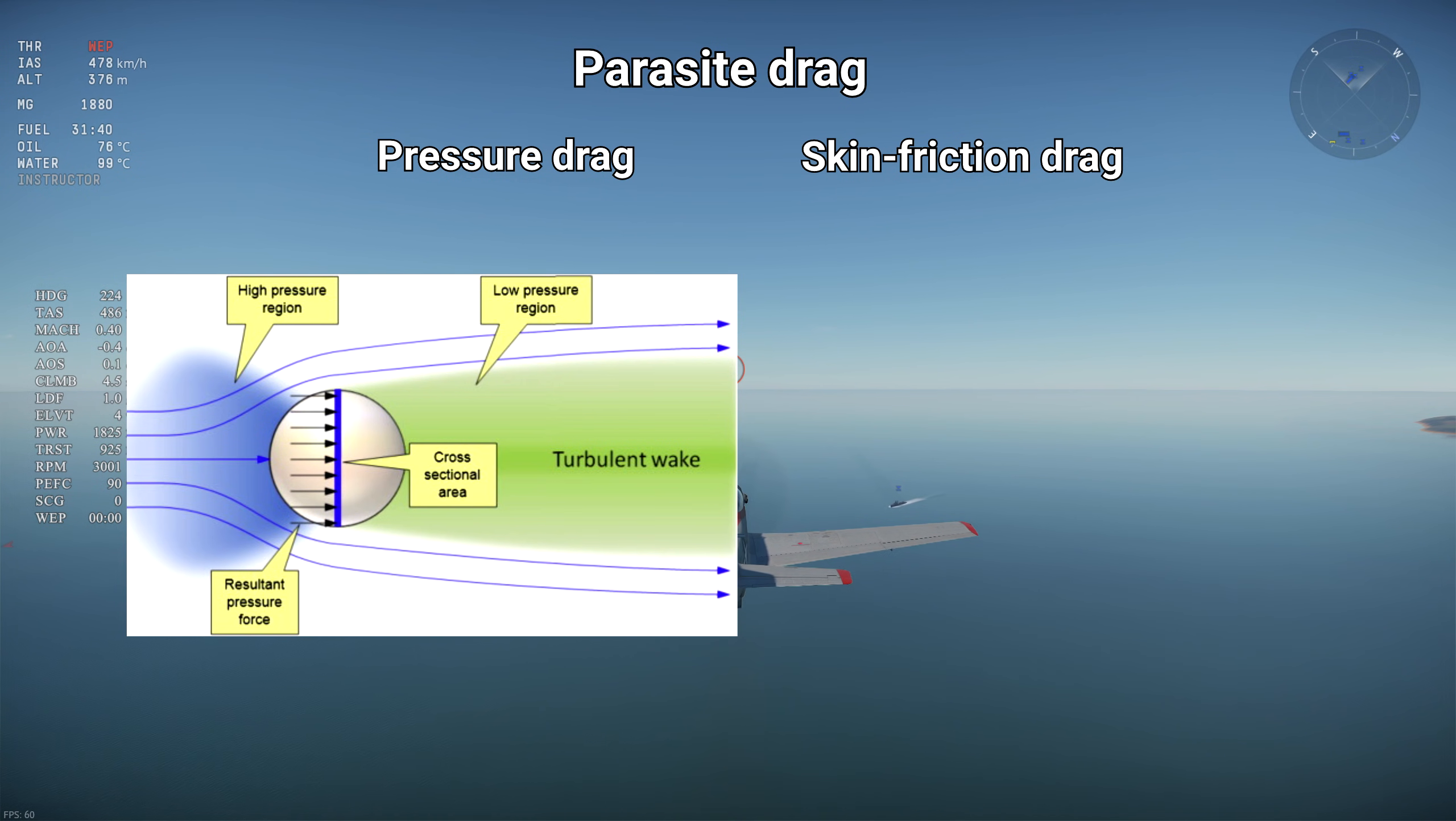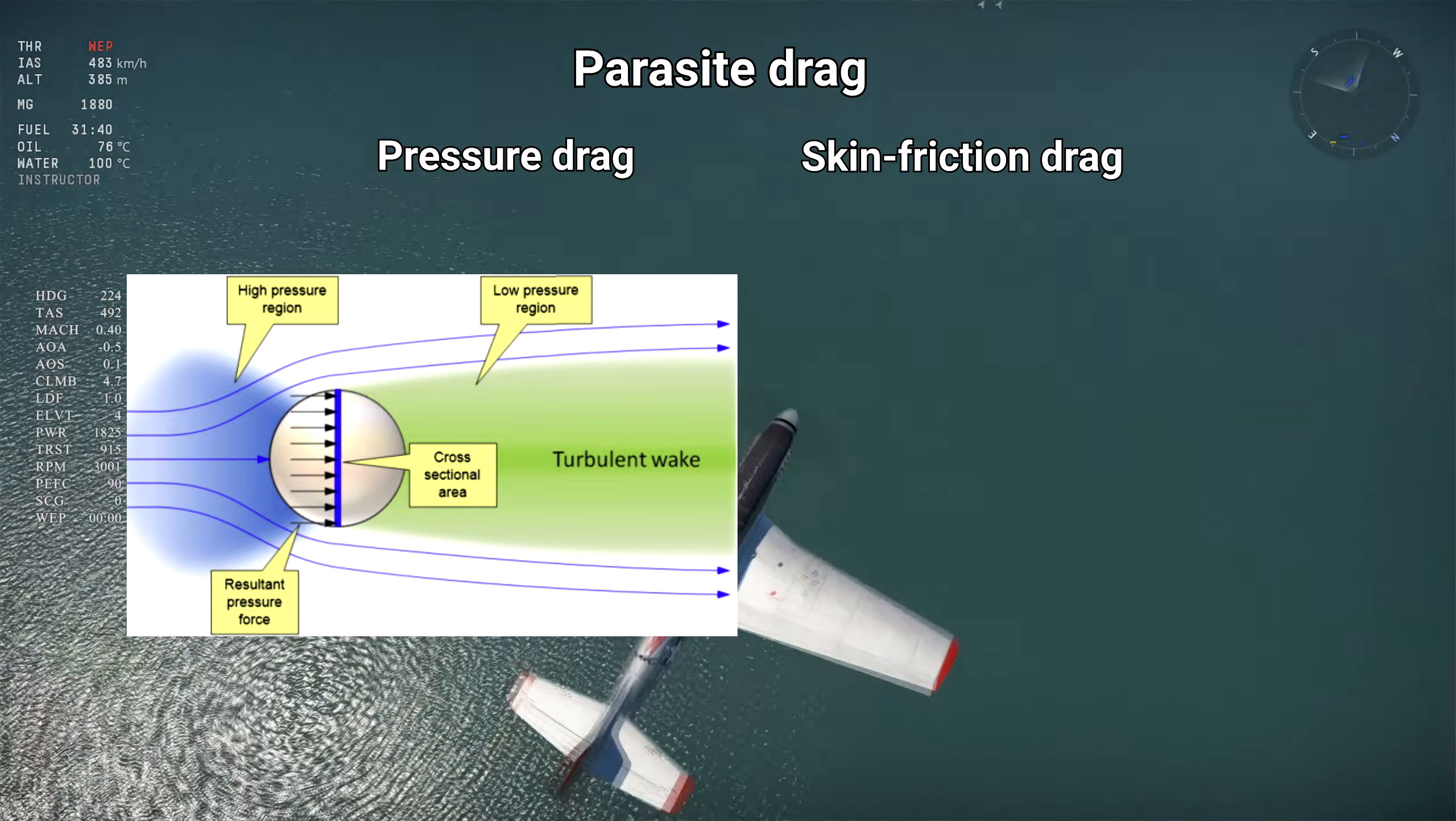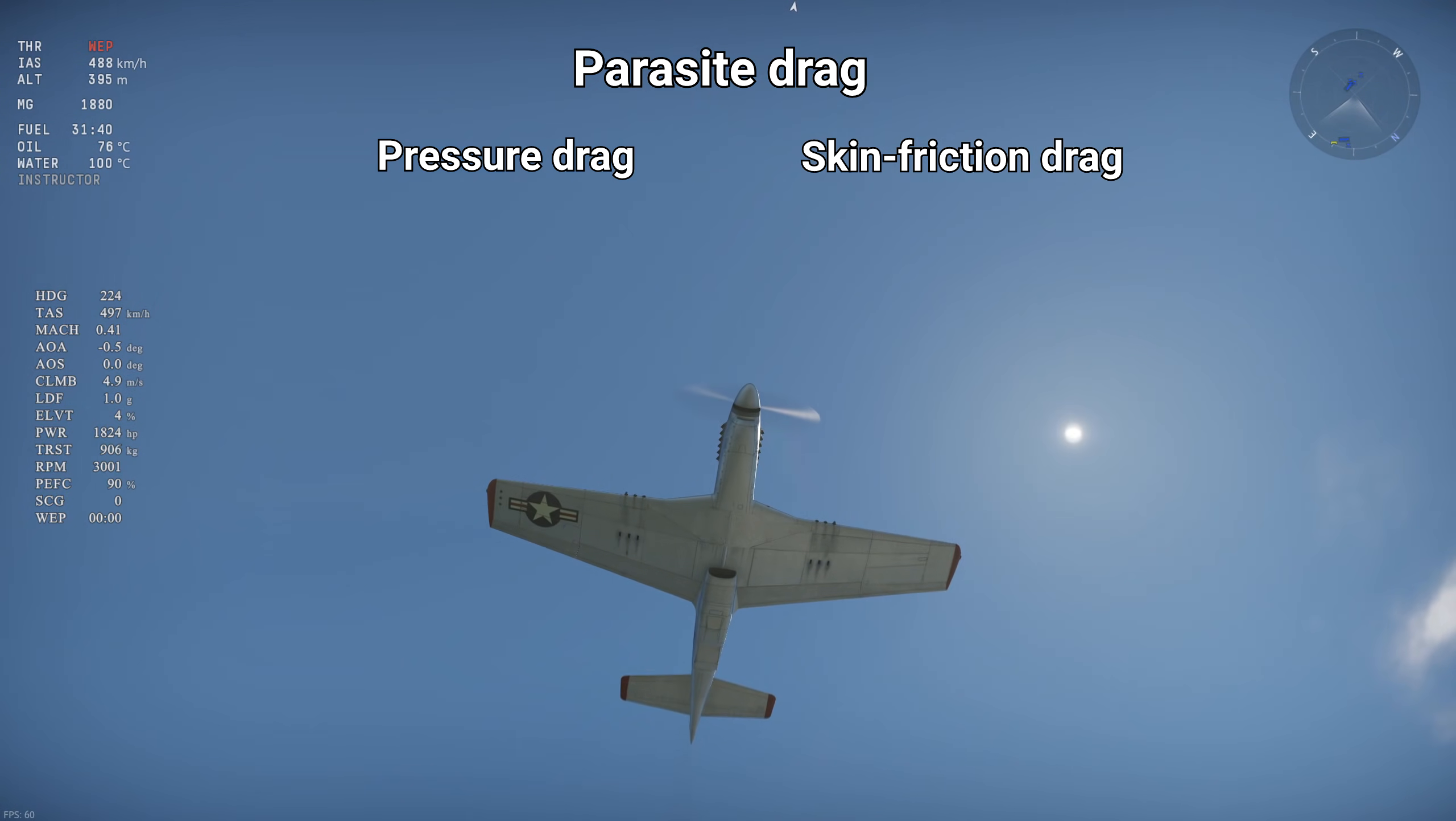For blunt bodies, pressure drag is the main component of parasite drag, while for slender bodies like wings and well-designed aircraft, skin friction drag is the main component of parasite drag.